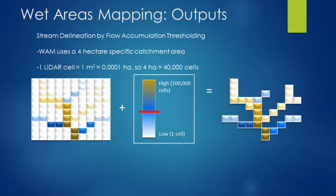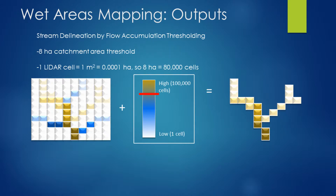For stream initiation thresholding, if we look at these LiDAR cells at one meter resolution, each cell covers one one-thousandth of a hectare. So four hectares of contributing area would be about 40,000 cells. If we threshold the dataset at 40,000 cells, we can define a rasterized channel network. And if we change that to an eight-hectare contributing area — 80,000 cells — the channel network becomes more conservative because more contributing area is required before channelization would be expected to occur.